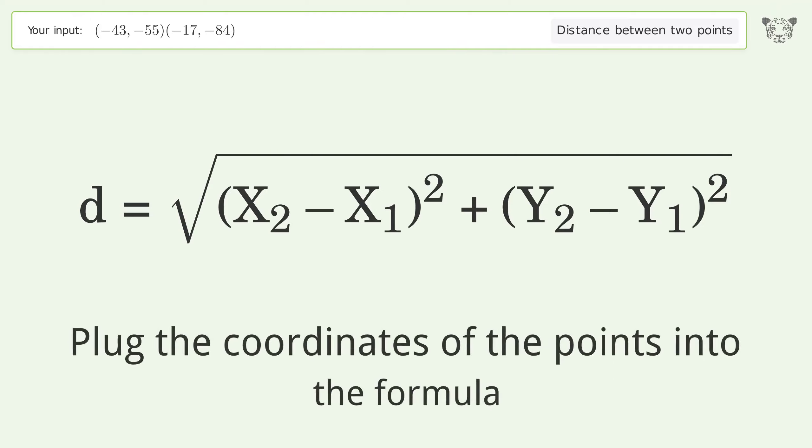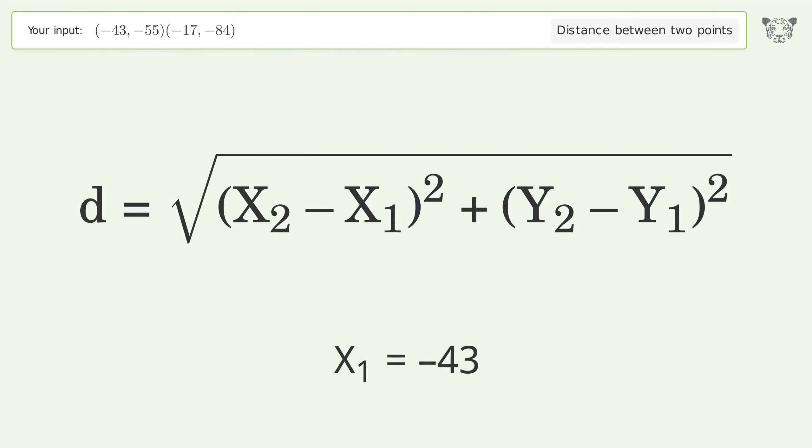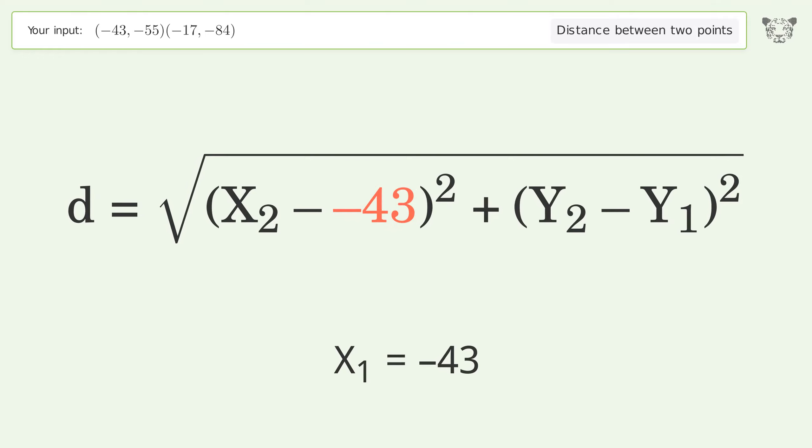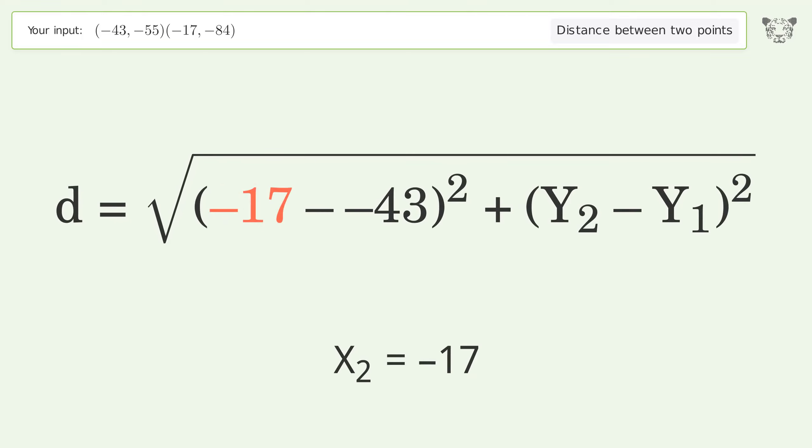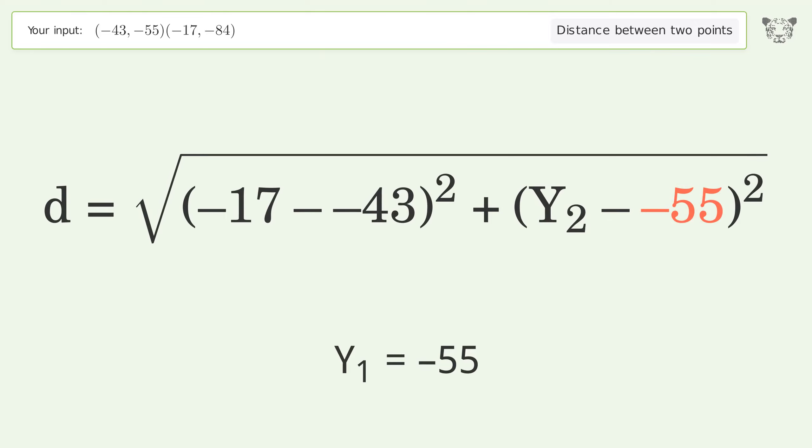Plug the coordinates of the points into the formula: x1 equals negative 43, x2 equals negative 17, y1 equals negative 55, and y2 equals negative 84.